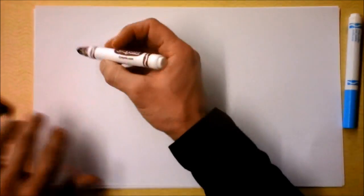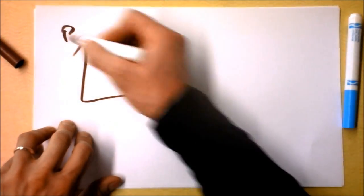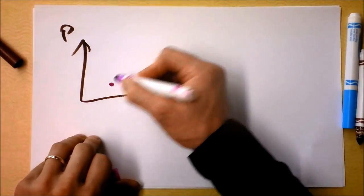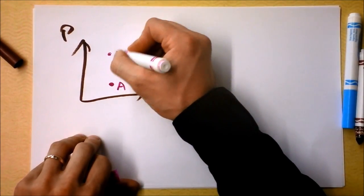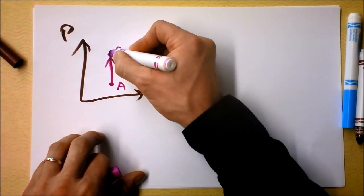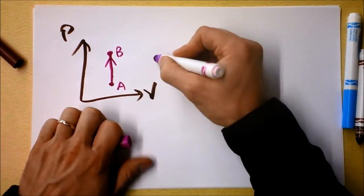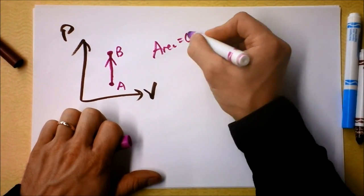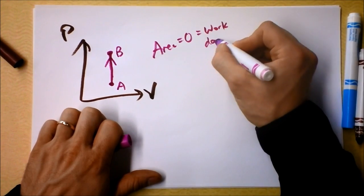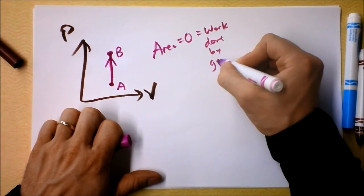Okay, one more tiny little bit. If I make a pressure-volume graph, and I keep the volume the same, I'm going from state A to state B, say, right here, what is the area? What's the area under a vertical line? Area equals zero equals work done by gas.